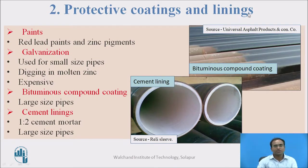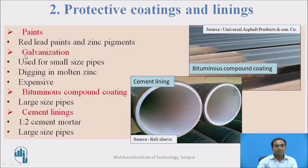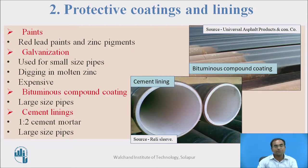Next one is protective coating and lining. There are different types of coatings and linings available in the market. In the paints, we mostly use red lead paints and zinc pigment. These zinc pigments and red lead pigments are basically lower electrochemical series metals, so they are not going to rust very much faster. The second one is galvanization — we do this basically for very small diameter pipes. We put a pipe into molten zinc so that all the surface area will be precisely covered with the zinc layer. It is mostly expensive, so we don't go for such galvanization often.